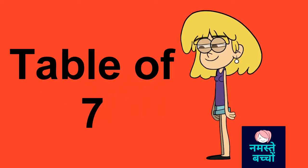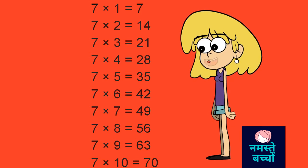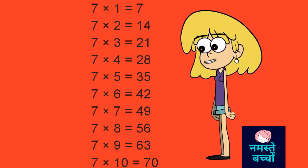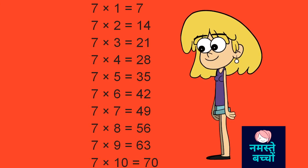Table of 7. 7 1's are 7, 7 2's are 14, 7 3's are 21, 7 4's are 28, 7 5's are 35, 7 6's are 42, 7 7's are 49, 7 8's are 56, 7 9's are 63.